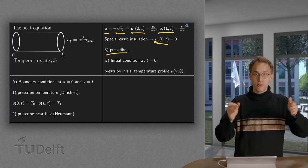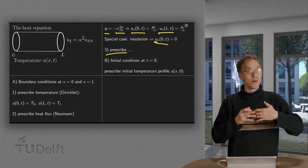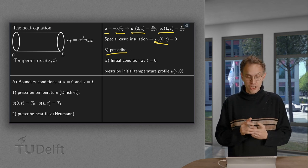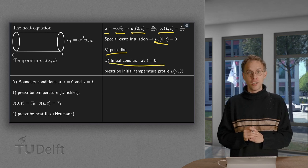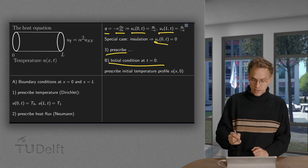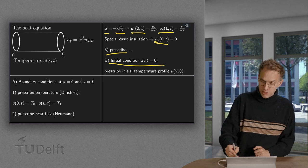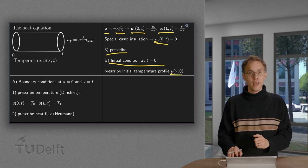Then, apart from the boundary conditions, we also need to specify where our temperature profile is initially. We have to specify some initial condition at time 0. Is it warm or cold or whatever? We need to describe the initial temperature profile u.